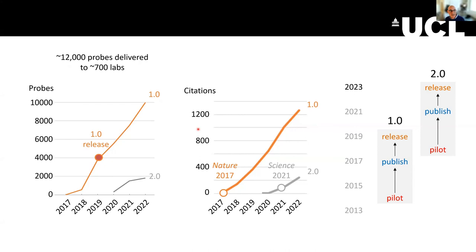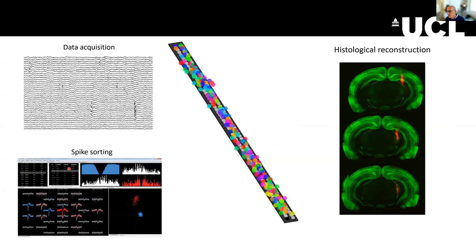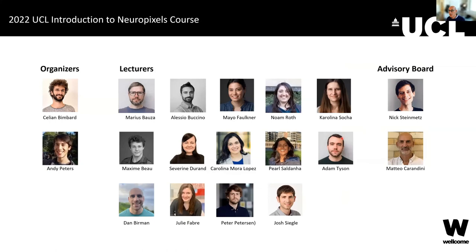The challenges are, of course, that you get a lot of data, you need to process it, spike sort it, and align it to histology — and this course will tell you all about it, or at least give you useful pointers. These are the people you will hear from. Celia and Andy are the organizers of the course, and the lecturers will all talk to you. Nick and I are just the advisory board — meaning we've done essentially nothing. I'll stop here and Celia and Andy should be able to share their screen. Thank you.